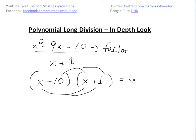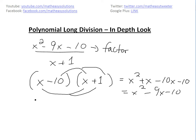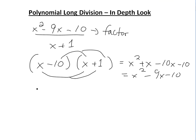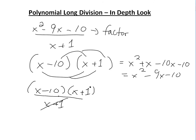This would just be x squared plus x, then minus 10x minus 10, and these add up to x squared minus 9x minus 10. So you could factor it out, and this would just be x minus 10 times x plus 1, divided by x plus 1 — and the x plus 1 terms cancel.